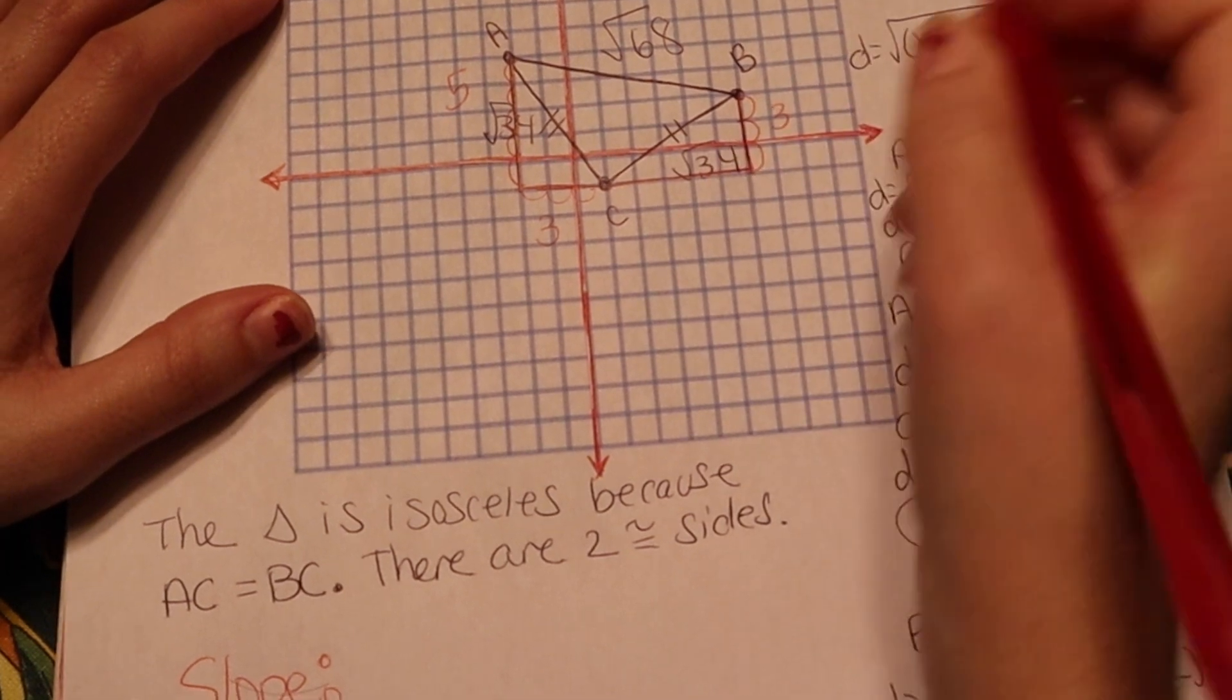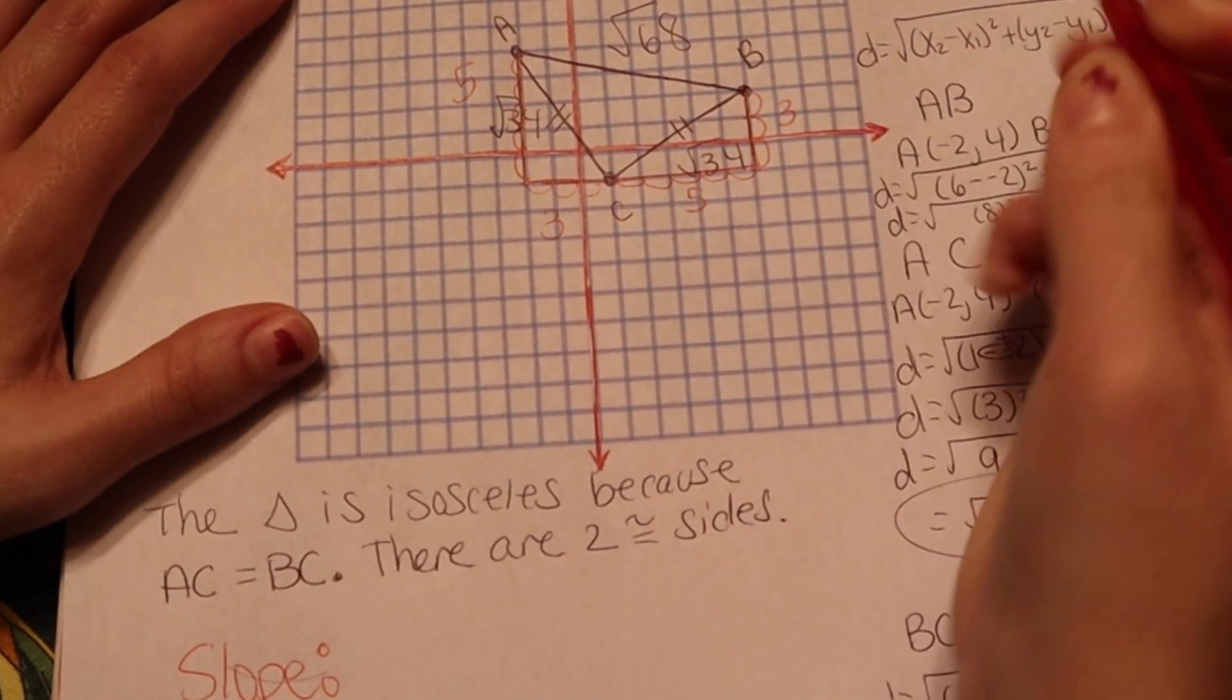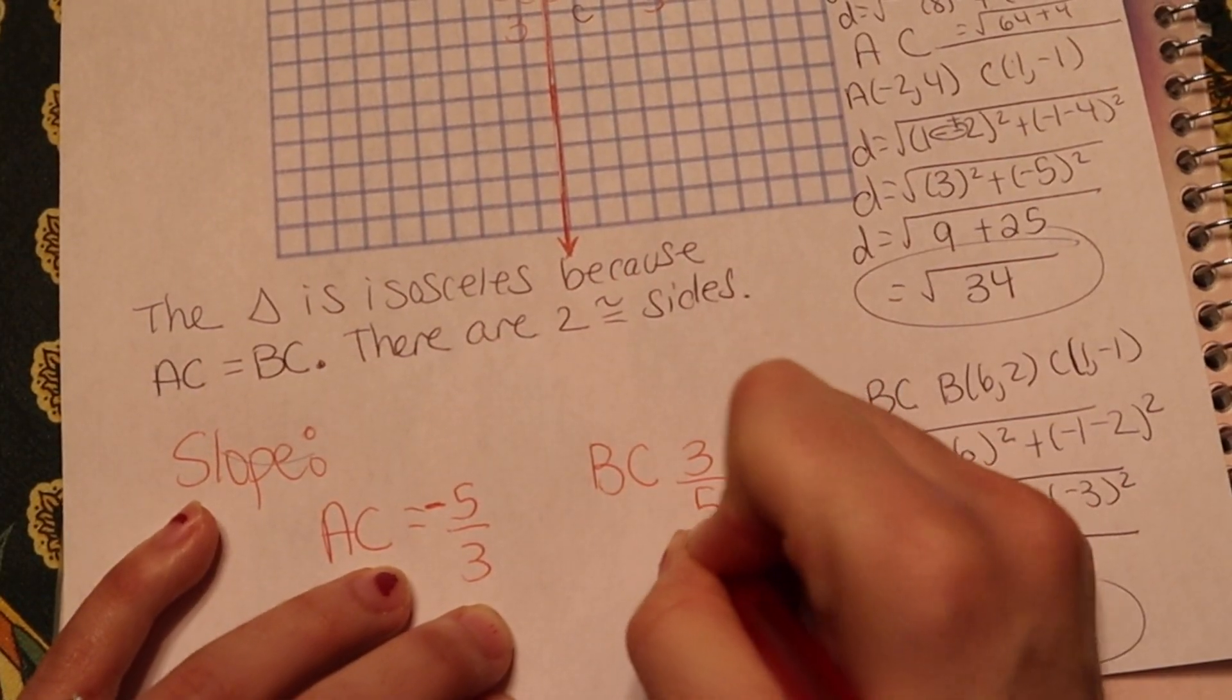So let's count this slope. 1, 2, 3. And the run is 1, 2, 3, 4, 5. And this line is going uphill. So the slope for BC is 3 fifths.